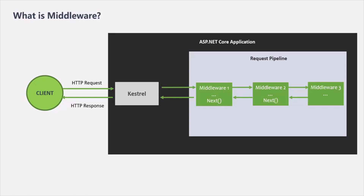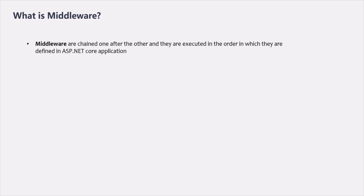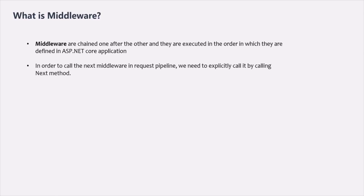A middleware is called middleware because it is a function which gets executed in the middle — that is, in between when the request is received and when the response is sent. There are a few important points to remember. First, middlewares are chained one after the other and executed in the order in which they are defined. To call the next middleware in the request pipeline, we need to explicitly call it using the next method. Also, there is no rule that each middleware must call the next one — such middleware are called terminal or short-circuiting middleware.